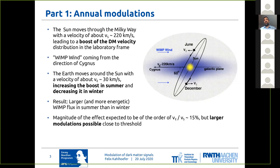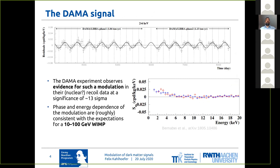This is of the order of 15%, though more like 10% or a bit less since the velocities aren't aligned. But you can conceivably have larger modulations if you're looking for a signal very close to threshold. And when we talk about annual modulations, of course, we have to talk about the DAMA signal.